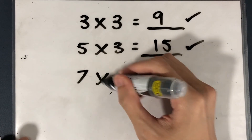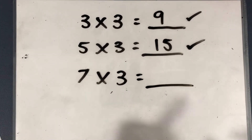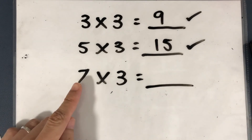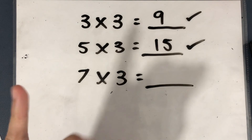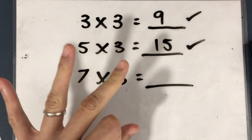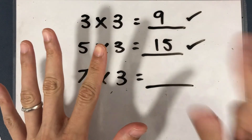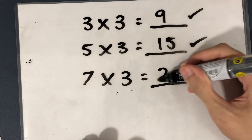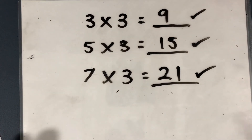What is 7 times 3? Now we get hard. Pause the video and try it. 7 fingers on the 3 times table: 3, 6, 9, 12, 15, 18, 21. The answer is 21. If you got this answer, give yourself a tick.